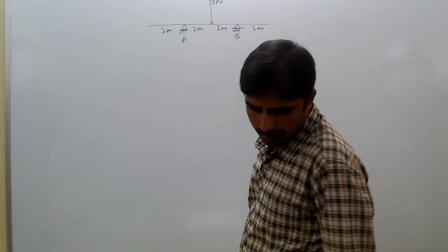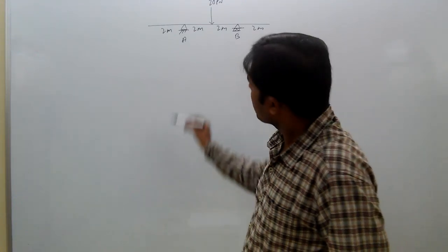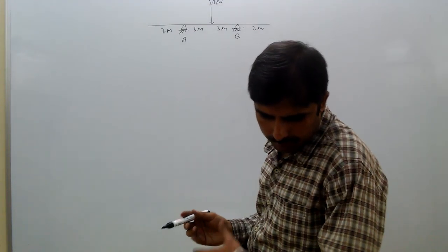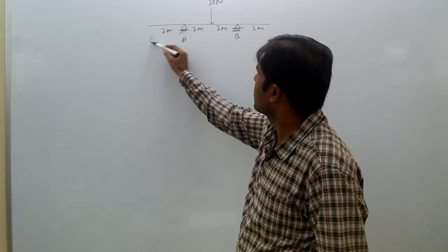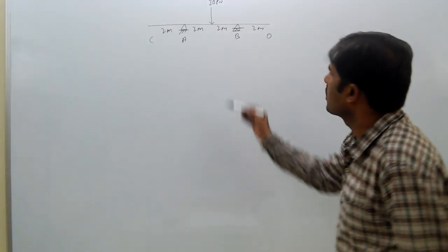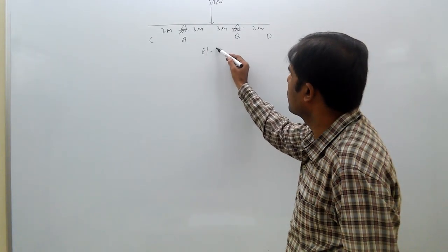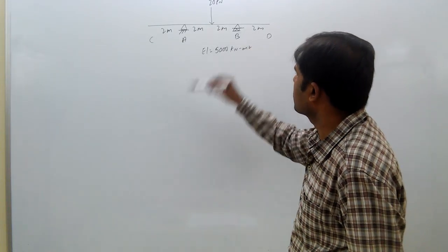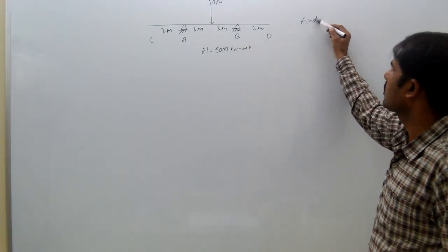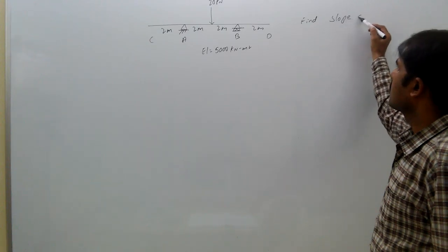Points labeled a, b, c, d. Given: a equal to 5000 kWh. Find slope at c.